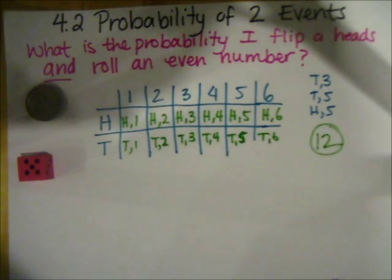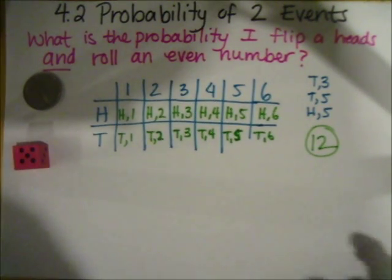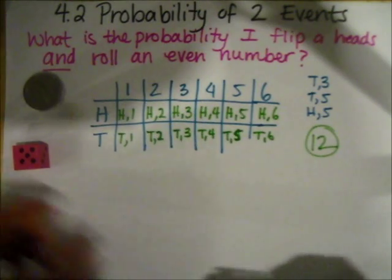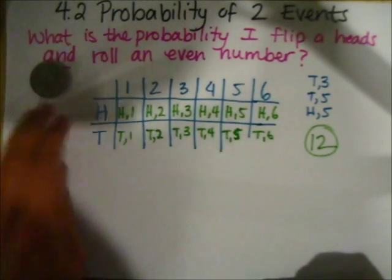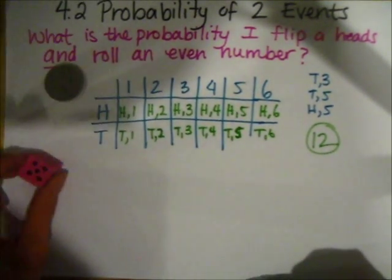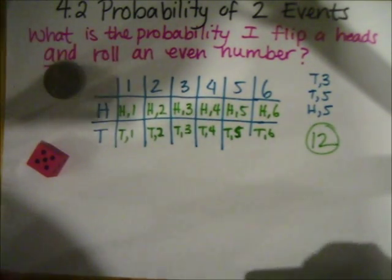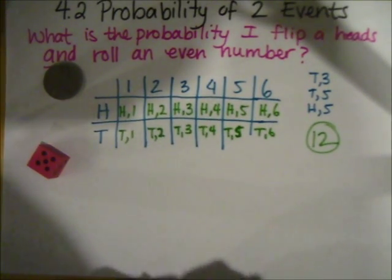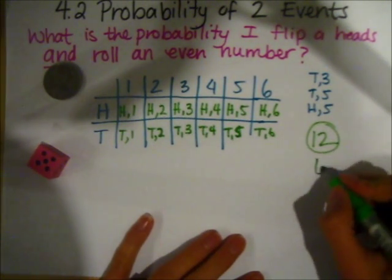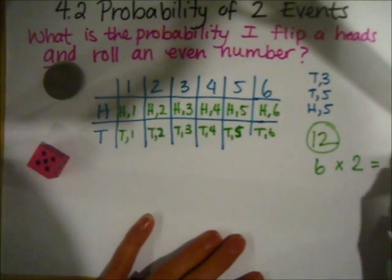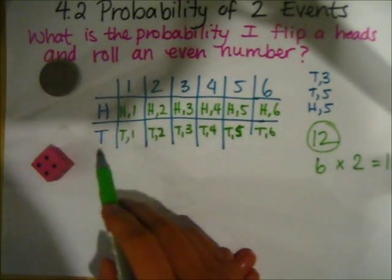These are what we call independent events — that means they don't affect one another. If I roll a dice and then flip a coin, whatever I rolled doesn't impact what I get on the coin. So they're independent events; they don't depend on each other. When you have independent events, your total outcomes are six outcomes on the dice times two outcomes on the coin, giving 12 outcomes altogether.